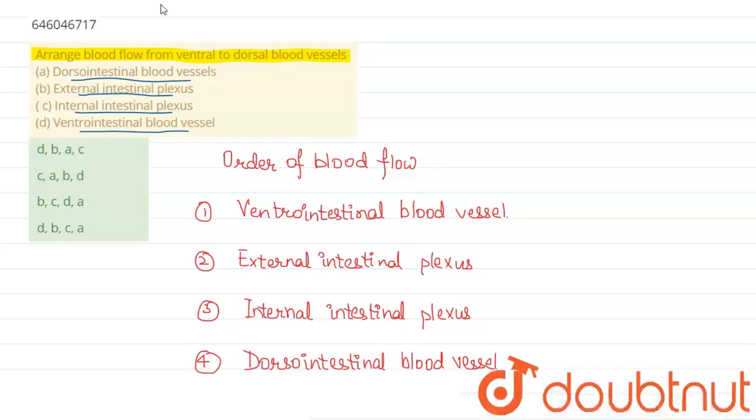So, this is the whole path of the blood flow from the ventral to dorsal blood vessel. And according to the options, if we see, it should be first starting from D, then B, C, and A.